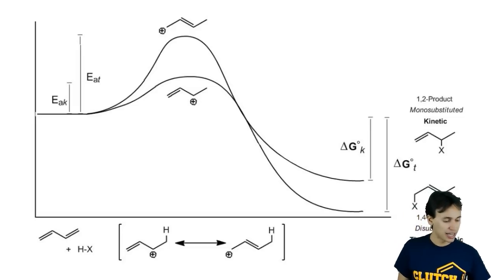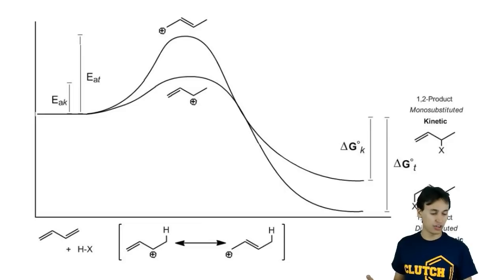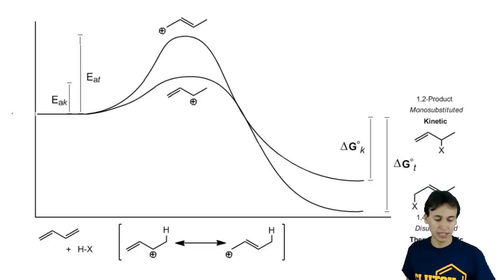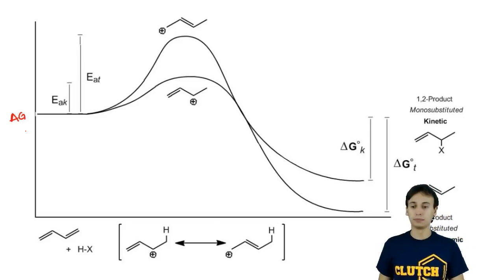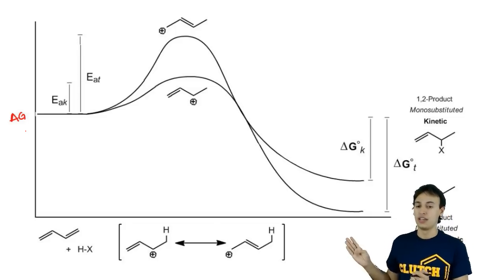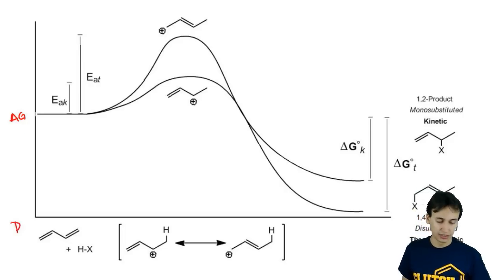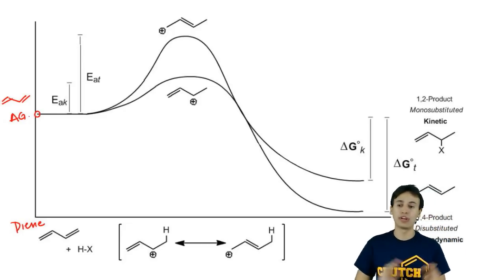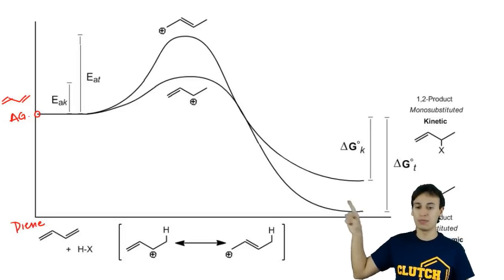First of all, let's just start at the beginning. Notice that I'm starting off. This is my energy reaction coordinate at the bottom. This is my x-axis and my y-axis is in free energy or delta G. What we notice is that in the reaction coordinate, we're starting off with a diene. The diene energy level is starting off right here. Regardless of the type of reaction conditions, we're always starting at the same energy.